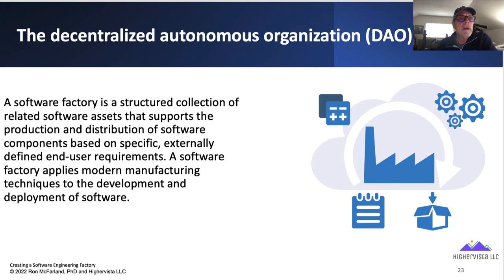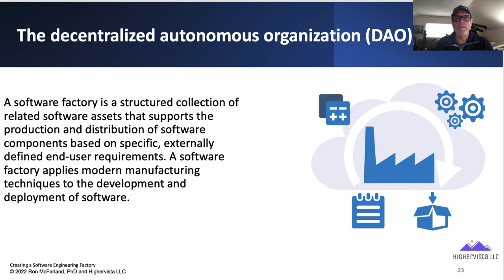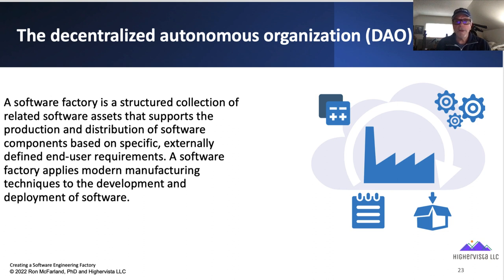Software Factory is a structured collection of related software assets. We talk about this in C++ programming, even Python — pick your flavor of language — where you have either a generalized library or a specific library where you can pull objects into your code. Both the production and distribution of software components are based on specific, externally defined, end-user requirements. So if I'm creating financial software and I'm using C++, I can buy a whole library of financial objects — built around user requirements.